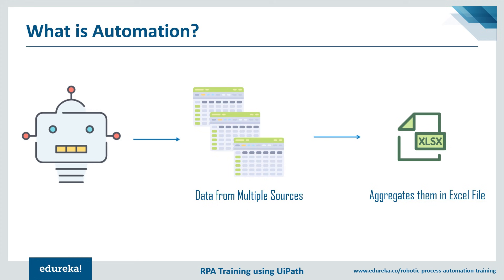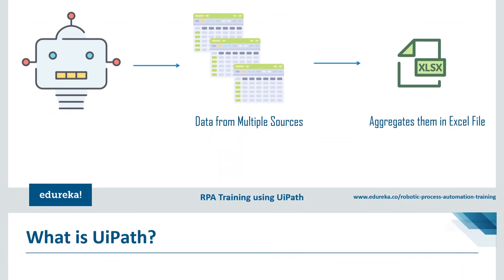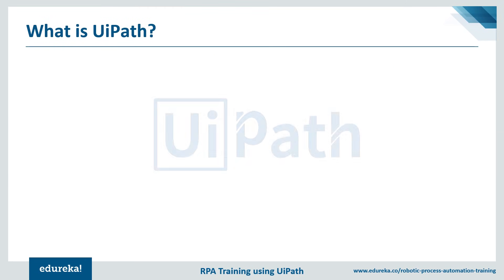If I have to define automation: automation is a technique of reducing human effort and improving performance simultaneously. To automate tasks, we obviously need tools, and one such tool is UiPath. Robotic process automation offers various tools such as Blue Prism, Automation Anywhere, Pega, Antworks, and so on. But the top market leaders are UiPath, Blue Prism, and Automation Anywhere. Since this session is basically on UiPath, let's focus on what exactly UiPath is.